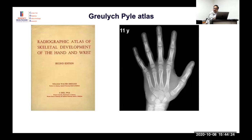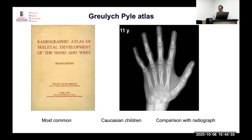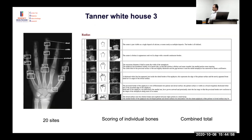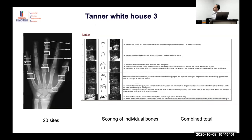Tanner-Whitehouse involves scoring different sites individually and combining them for a final age estimate. Applications are available that compare twenty sites initially, score individual bones, and produce a combined total. Automated Bone Expert gives results closest to the standard method by applying regression analysis against both Tanner-Whitehouse and GP, producing two outputs — one GP-based, one TW-based — using different equations.